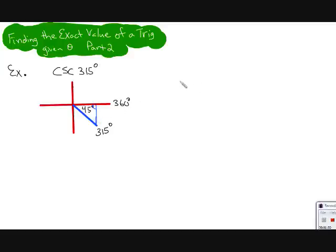That allows me to remember that this is a special right triangle. The ratio for a 45-45-90 triangle is 1, 1, square root of 2.